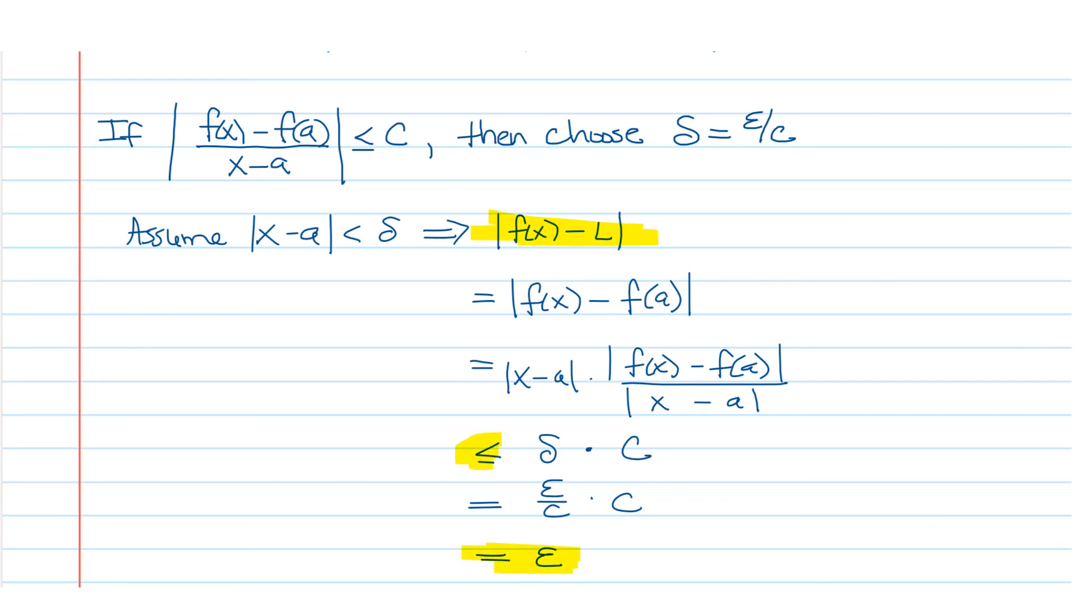So we're going to now practice on a particular example using this procedure of finding delta and then writing out the delta epsilon proof for the limit of a rational function.